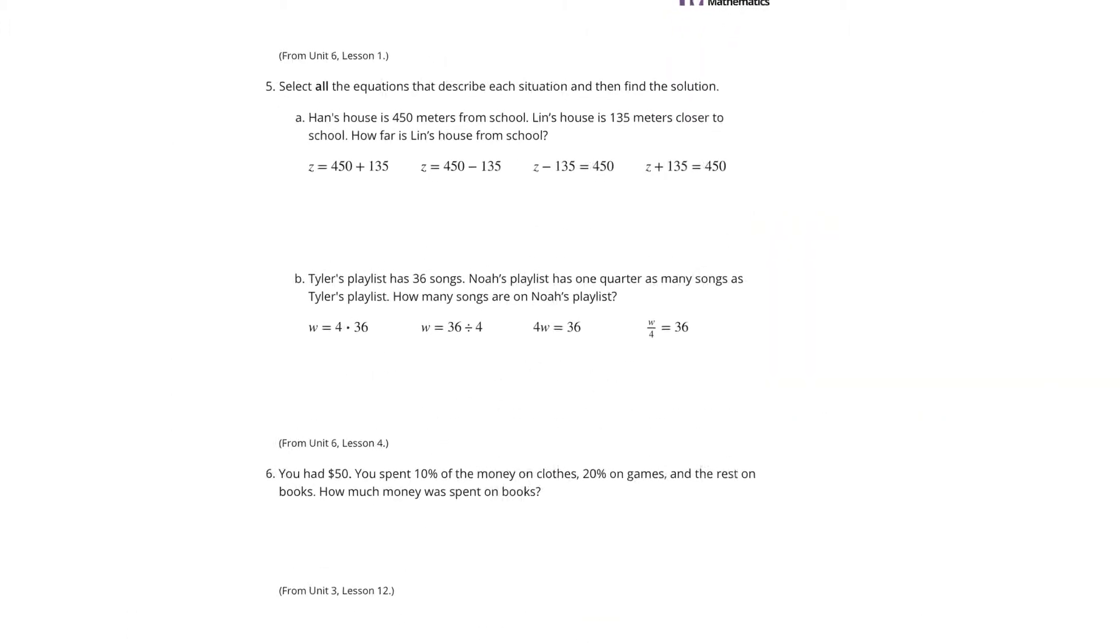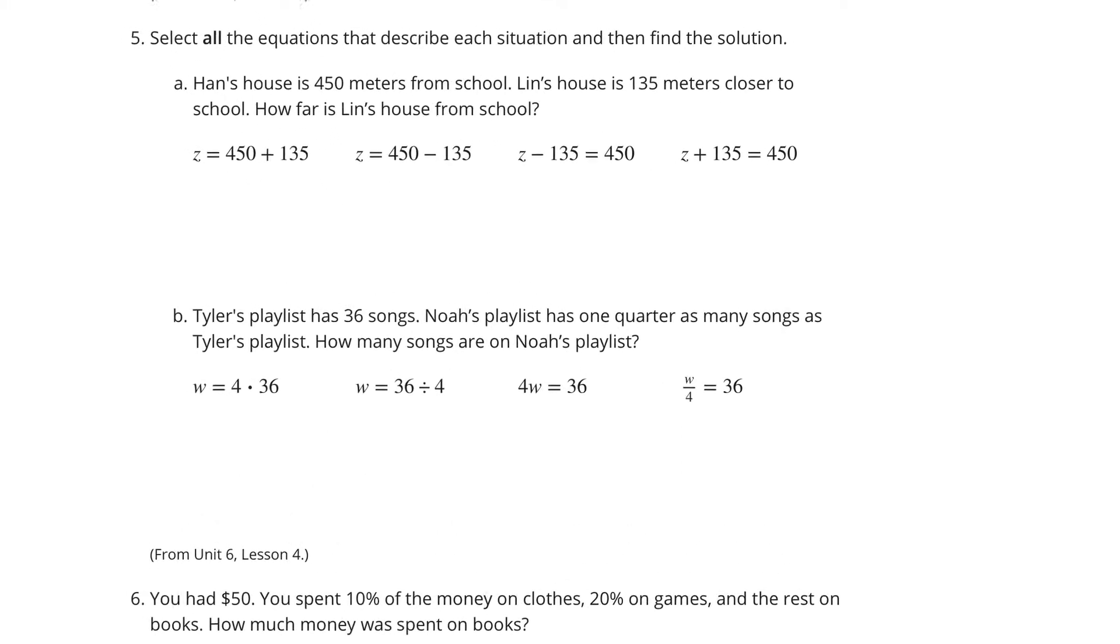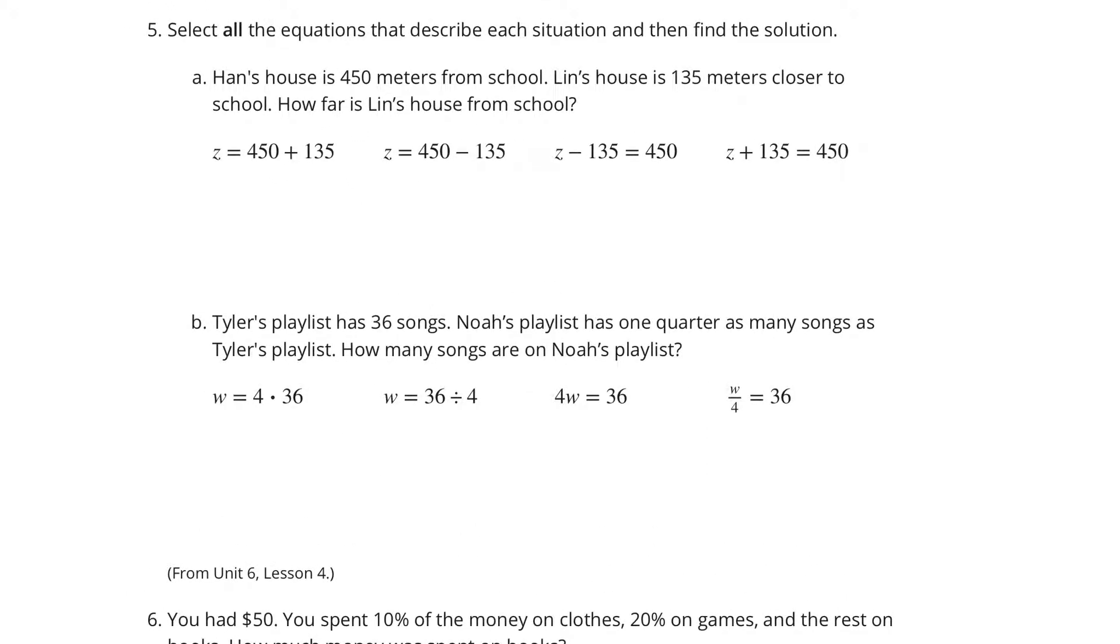Continuing on, select all the equations that describe each situation and then find the solution. In part a, Han's house is 450 meters from school. Lin's house is 135 meters closer to school. How far is Lin's house from school? Well, our solutions here are going to be z equals 450 minus 135 and z plus 135 equals 450.